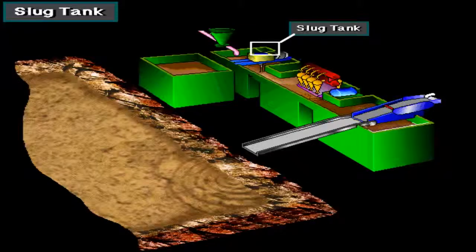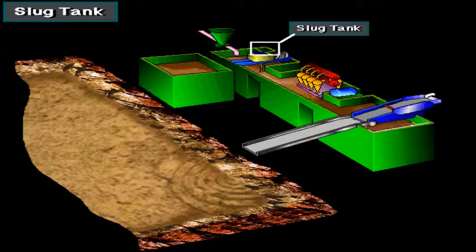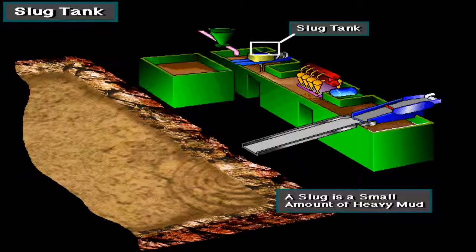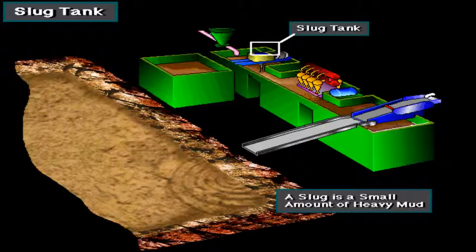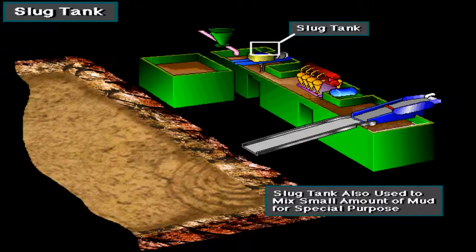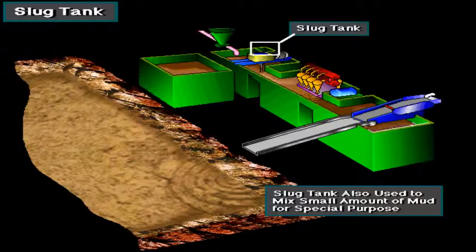A slug tank is a relatively small separate tank, or it may be a small separate part of a larger tank. The crew uses the slug tank to mix a slug — a small amount of heavy mud that is pumped down the string. Crew members may also use a slug tank to mix a small amount of mud for a special purpose, such as placing a small quantity of high viscosity mud, also called a pill, at some point downhole.